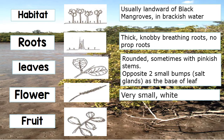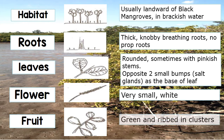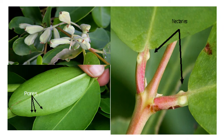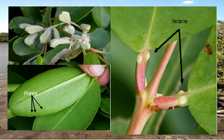The flower is very small and white. The fruit is green and ribbed in clusters. Here we have the white mangroves: the fruit, the leaves, and we will see those salt glands.